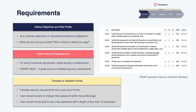Moving on to the requirements stage: right at the conception of the application or new features, you'll obviously write out your functional and non-functional requirements. Here, you also need to start writing out your security requirements. Begin by defining your business objectives and any compliance obligations — are you holding payment card information? Are you working with the government, which may mandate certain standards of security? Or perhaps you work with health services like the NHS. You want to have an idea of what security requirements you need to meet by default.